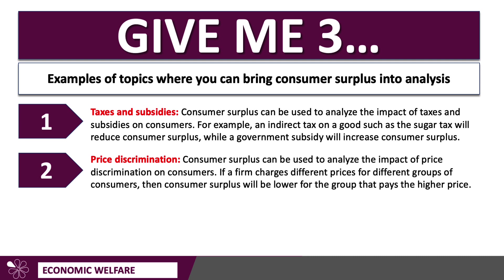My second example is price discrimination — charging different prices to different groups of consumers for what is essentially the same good or service. I've got an example of things like rail fares and ticket prices for various events. If firms charge different prices for different groups of consumers, then typically consumer surplus will be lower for the group that pays the higher price. And they will tend to be that segment of the market where price-elasticity of demand is low, and as a result, the firm can charge a premium price for those people. Whereas groups with a more price-sensitive demand will tend to be charged a lower price, and that has a less negative effect on consumer surplus.